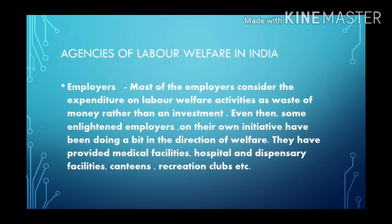Even then, some enlightened employers on their own initiative have been doing work in the direction of welfare. They have provided medical facilities, hospital and dispensary facilities, canteen or fair price shops, and recreation clubs. These facilities are apart from their liability under various central or state legislations. The employer is thus the third agency of labor welfare in India.